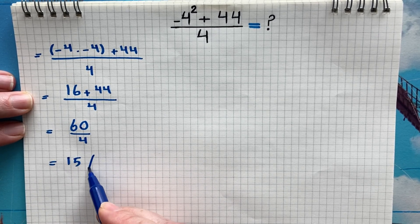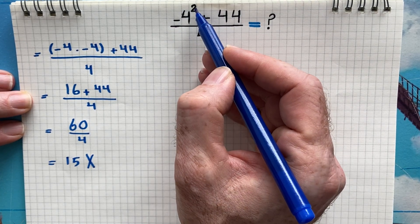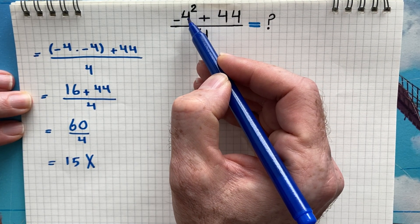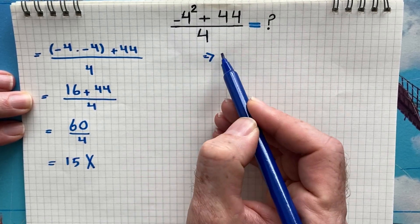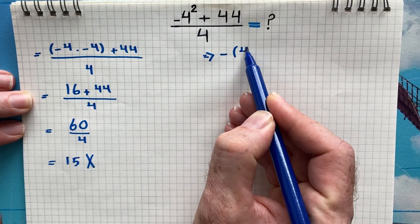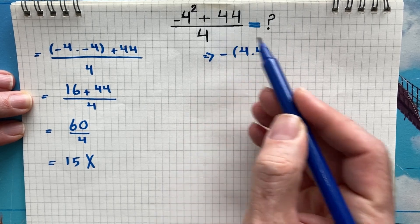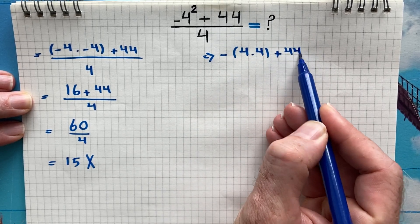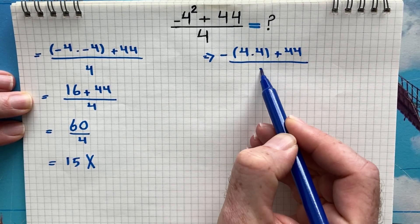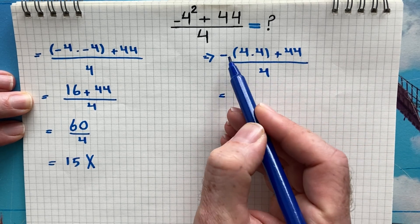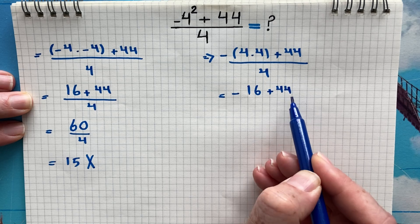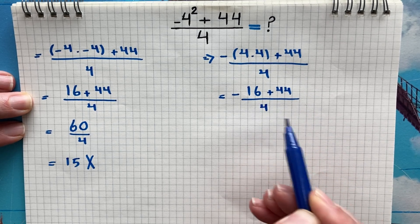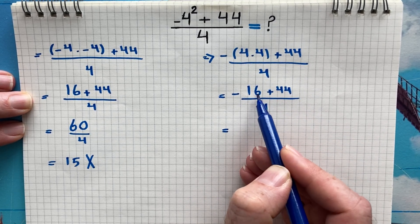Is 15 the correct answer? Absolutely not. Why? Because in this case, the squared only applies to the 4, not the negative sign. So it should be written as negative of 4 times 4, plus 44 over 4. Then negative 4 times 4 is going to be negative 16, plus 44 over 4.